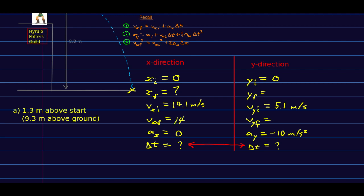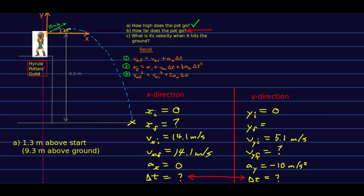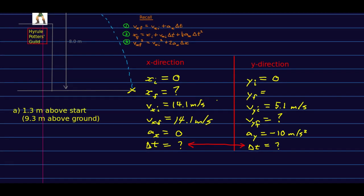So just before the impact, we know that vxf will still be the same as vxi, because the ax is zero. We don't know vyf. However, what we do know is yf. The pot started at zero in y. It ends up eight meters below that. And we have set y as positive up, so our final value of y is negative eight meters.